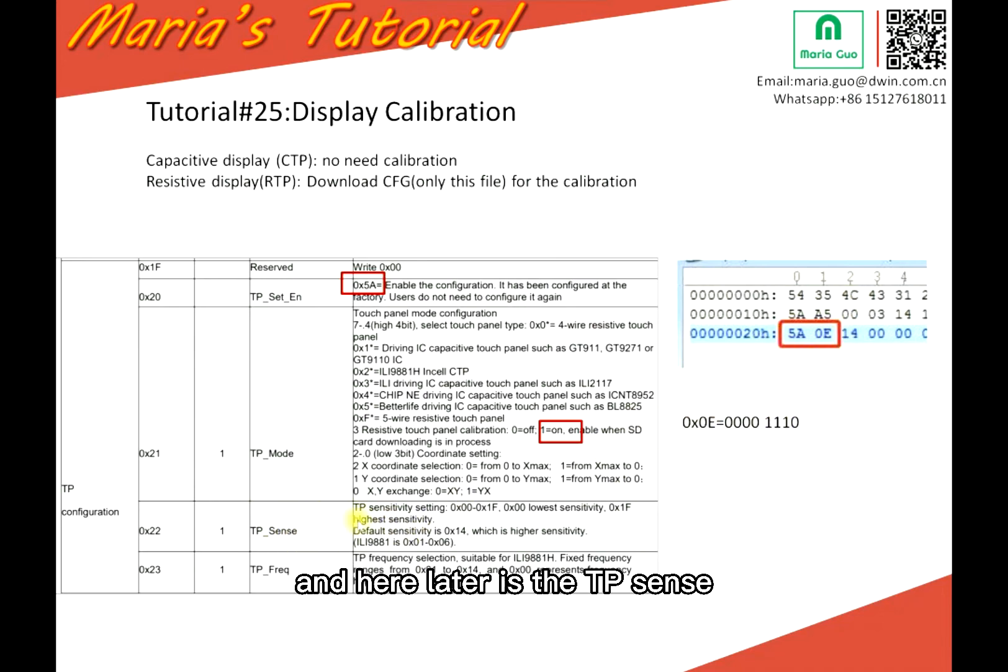And here, later is the TP sense, TP sensitivity setting. The utmost digital number is 1F. So we default sensitivity is 1F. This is the factory settings. So if you want to have higher sensitivity, you can change this part to 1F. This is at most.